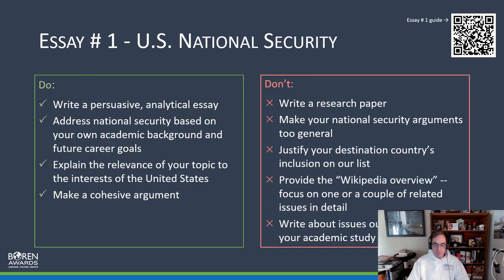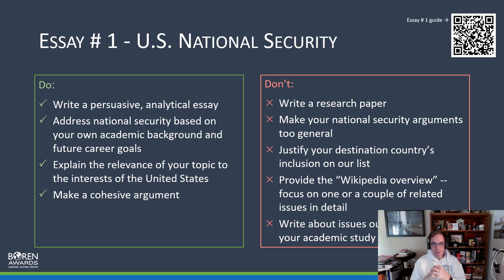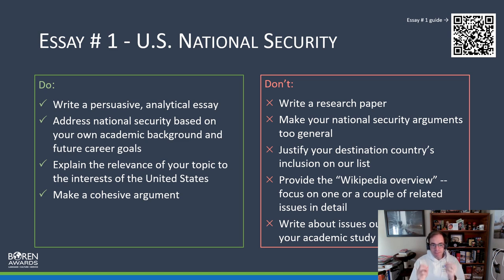There are do's and don'ts. We basically want you to write a persuasive analytical essay. For some of you in STEM fields, make sure this essay flows well — it's not in bullet points. We do get some engineers who write it like an engineering diagram, so try to avoid that. You want to make sure you're addressing the national security argument based on your own academic and future career goals. This is very important — linking your career goals, what you want to do in the federal government, which you'll talk about in detail in essay two — have some taste of that in essay one and have a link.